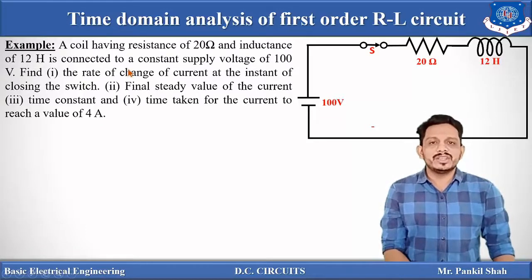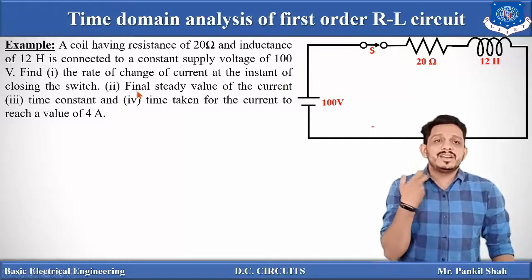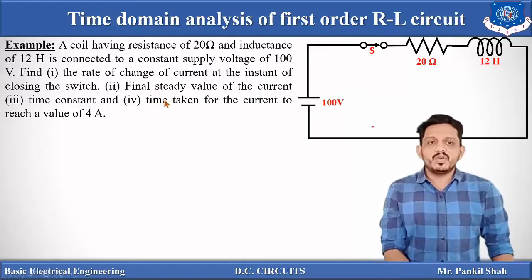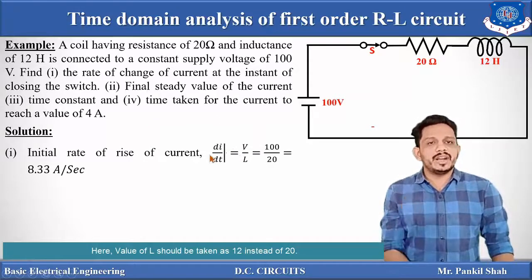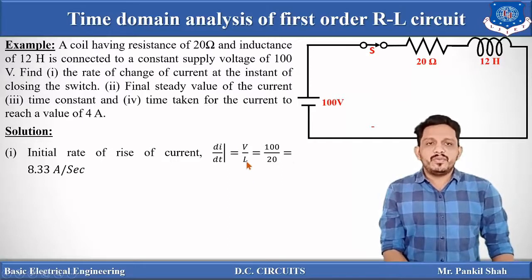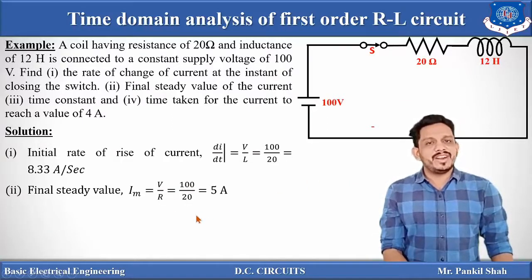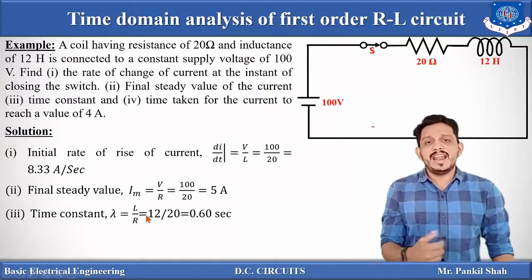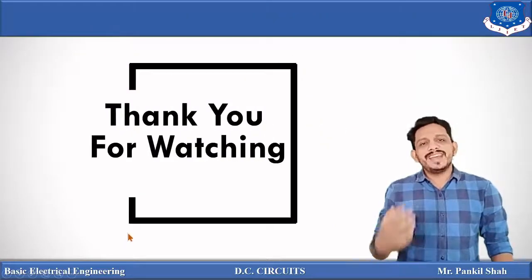Now let us solve one example related to this RL circuit. A coil having resistance 20 Ω and inductance 1200 mH is connected to a constant supply voltage of 100 V. Find: (1) the rate of change of current at the instant the switch is closed — di/dt = V/L = 100/20 = 5 A/s; (2) the final steady-state current = V/R = 100/20 = 5 A; (3) the time constant λ = L/R = 12/20 = 0.6 s. Thanks for watching this video — stay tuned.